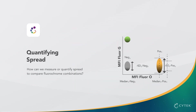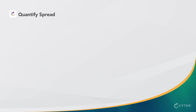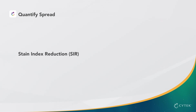Now that we understand what spread is, how can we measure or quantify it to compare fluorochrome combinations? At SciTech, we use two calculations to understand the impact of spread: the stain index reduction, or SIR, and the spillover spreading value, or SSV.